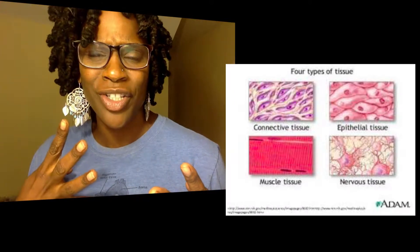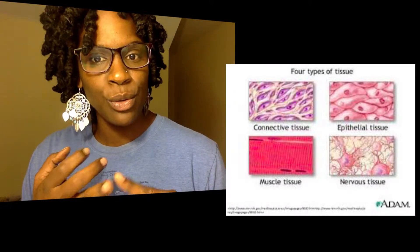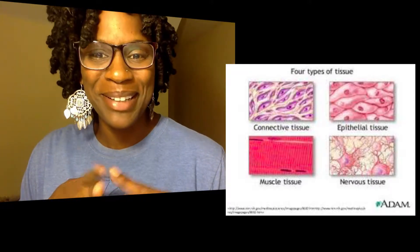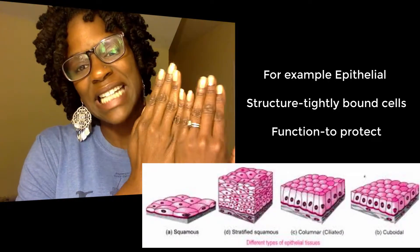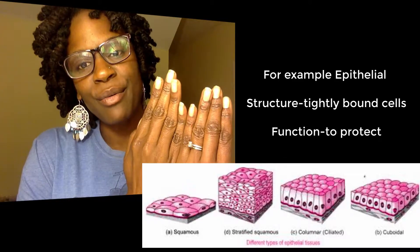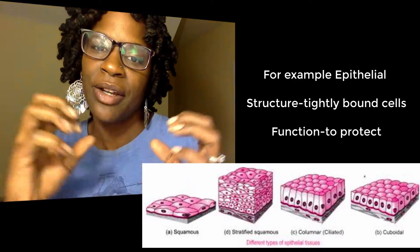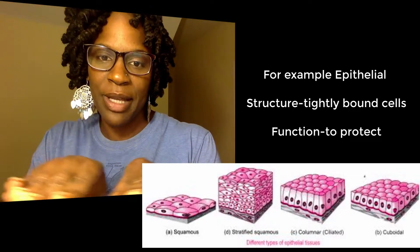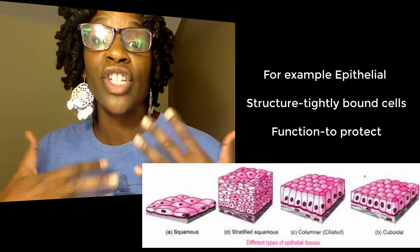When it comes to structure and function, we know that the shape of a cell will determine its function. In the human body there are four different types of tissues: connective, muscle, nervous, and epithelial. Epithelial cells are membrane-bound, tightly packed together, shaped in columnar or cuboidal forms, and their shape helps them be laid in sheets because their function is protection.